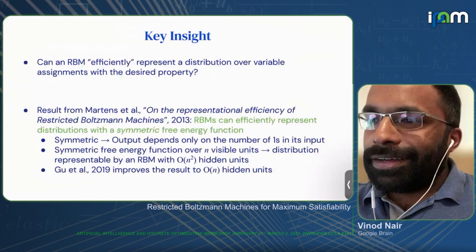How is it possible to construct this RBM with the desired property, and is it small enough to be practical? The key insight comes from a 2013 paper by James Martens and collaborators — 'On the Representational Efficiency of Restricted Boltzmann Machines.' Their key result was that if the free energy function of the distribution you're trying to represent is symmetric — meaning the output only depends on the number of ones in your inputs — then an RBM can efficiently represent it. By efficient, the number of hidden units required is a low-order polynomial of the number of visible units.